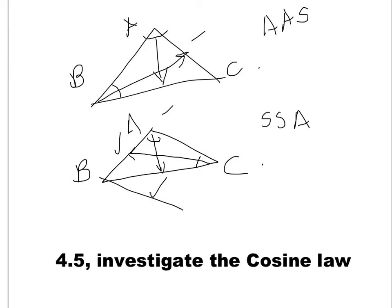But the problem starts when you don't have either one of these cases — when you have two sides and an angle between them, which we call the contained angle, or if you have three sides. If you have three sides, there is no way to use sine law because no angle is known. So you have to use something like cosine law.